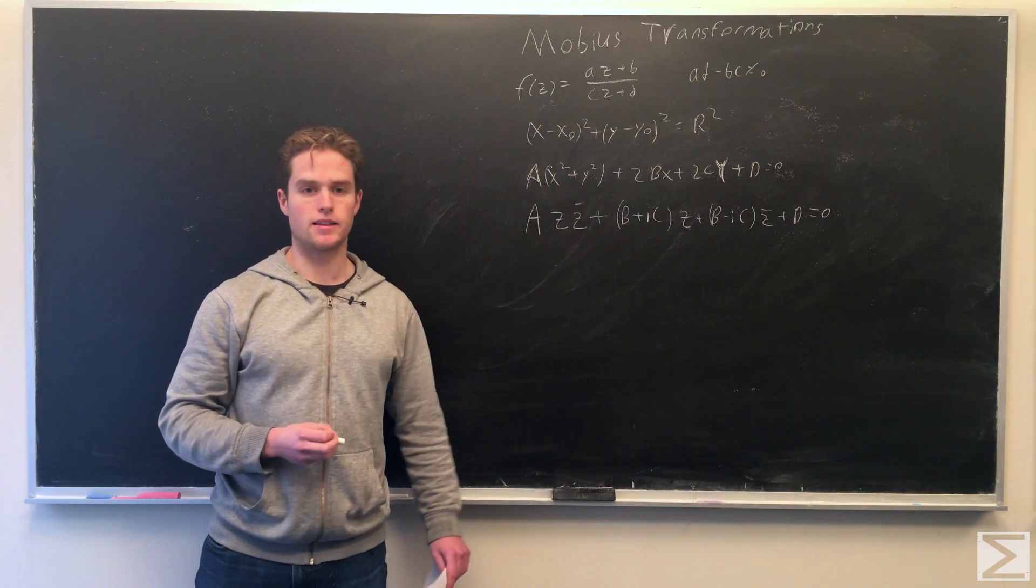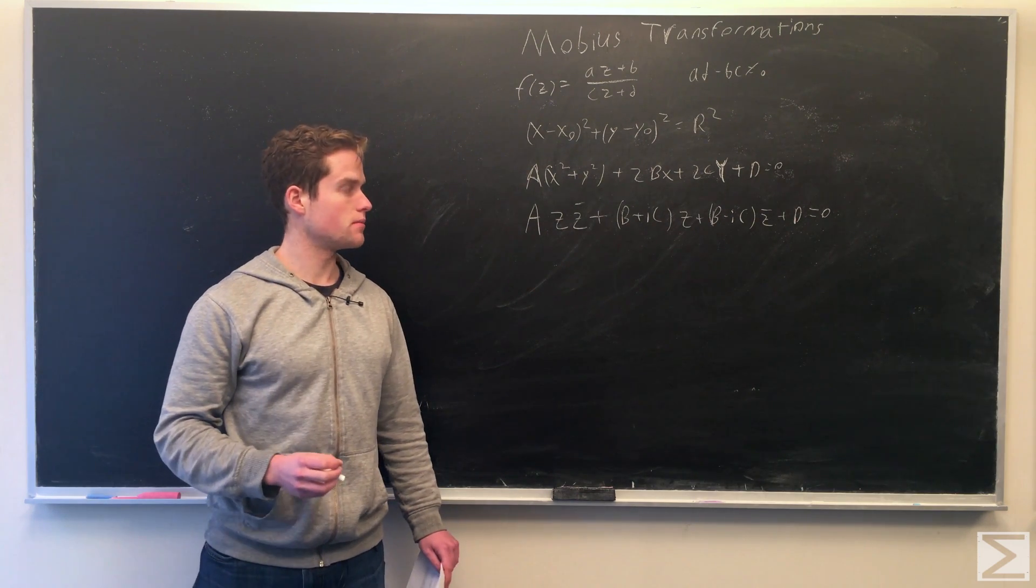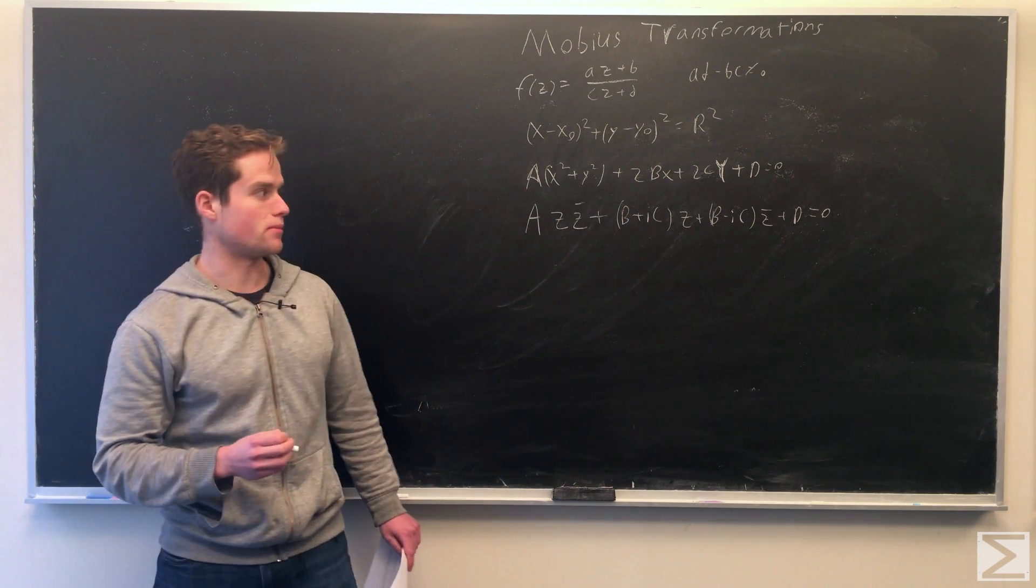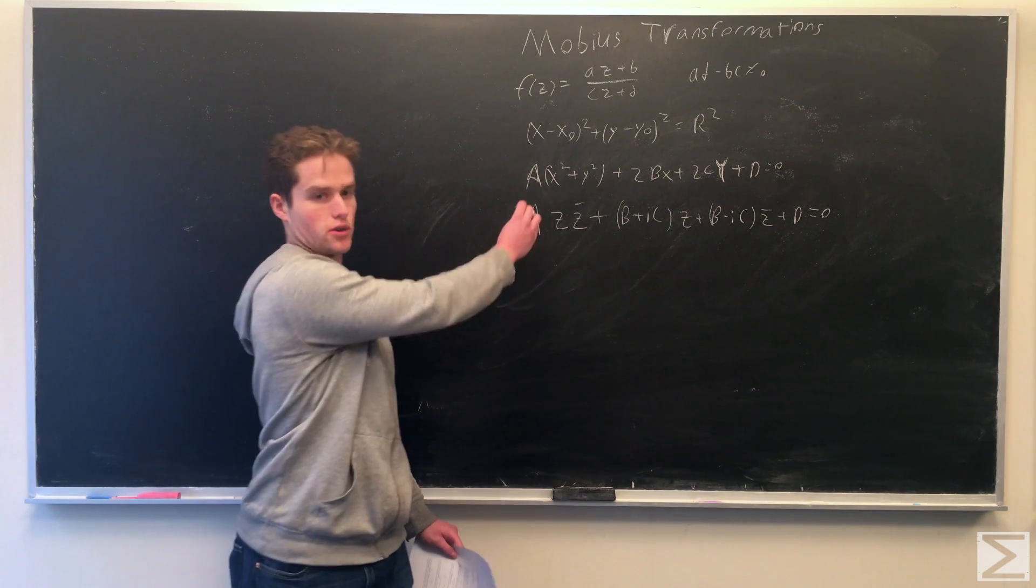We're going to write this as a times z conjugate of z plus b plus ic times z plus b minus ic times conjugate of z plus d equals 0. This being equivalent to our previous form.